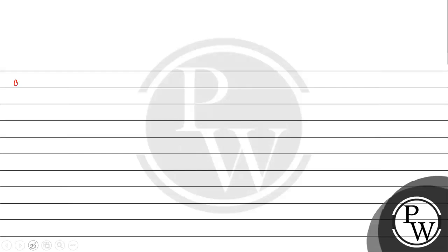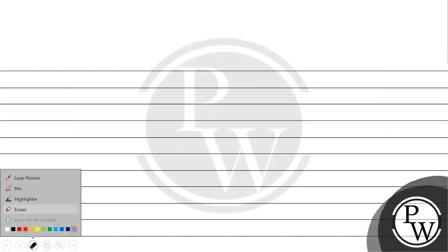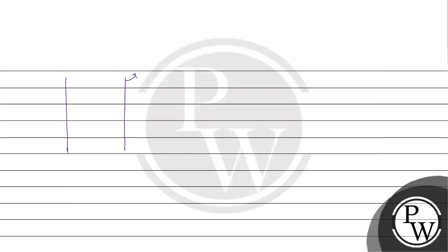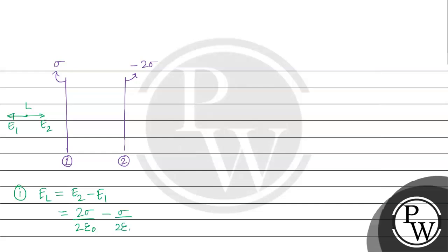The first question is to the left of the first sheet. Look at this figure. Suppose this is one plane sheet of charge with charge density sigma, and this is another plane sheet of charge with charge density minus 2 sigma. For a point to the left: if sigma is positive, E1 points to the left. For the minus 2 sigma sheet, E2 points to the left as well, but E2 is larger. E2 has magnitude 2 sigma by 2 epsilon, and E1 has magnitude sigma by 2 epsilon. The net field for the first part points in that direction.